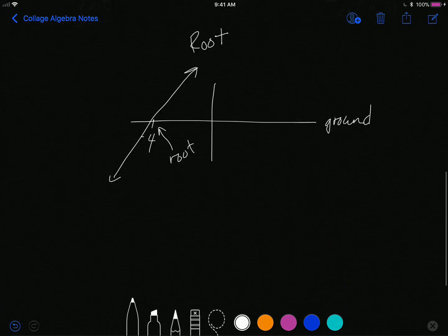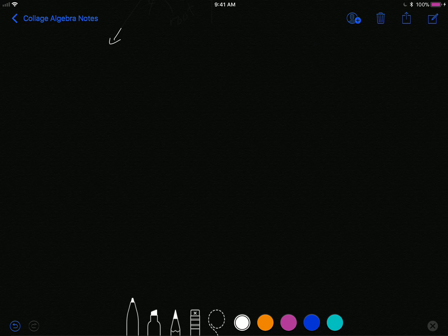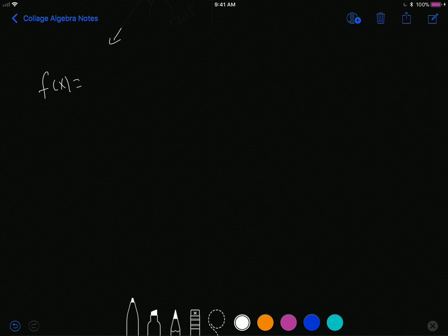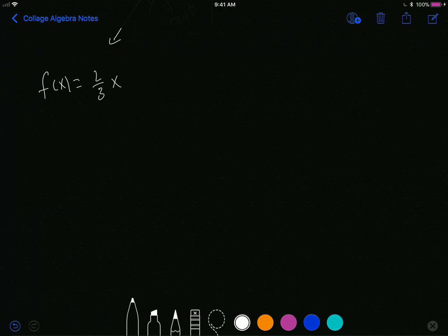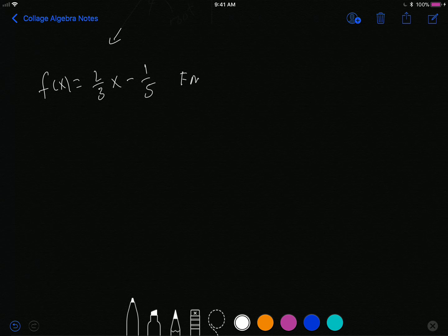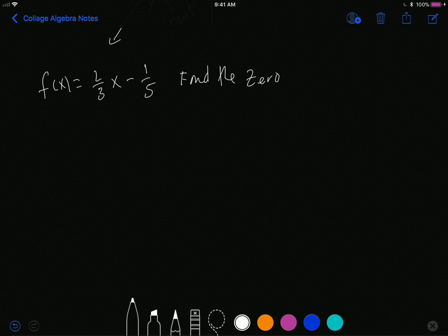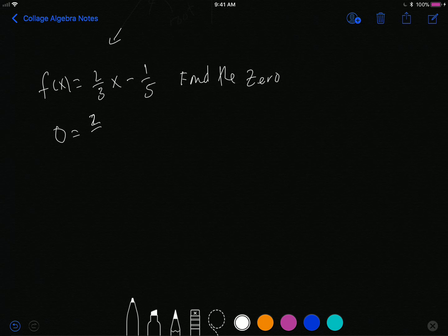Let's look at another example of finding zeros. Let's say I have f(x) equals two-thirds x minus one-fifth, and I'm trying to find the zero.